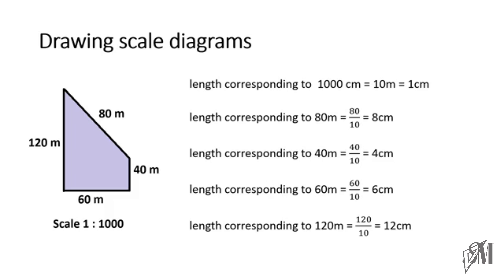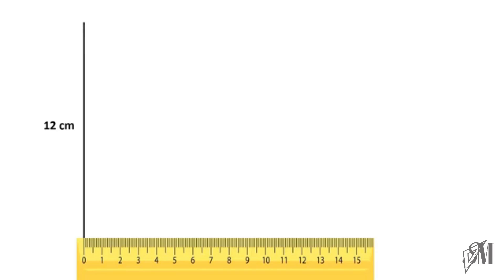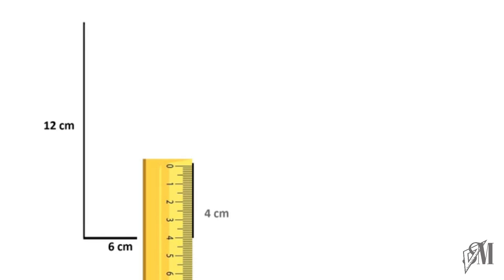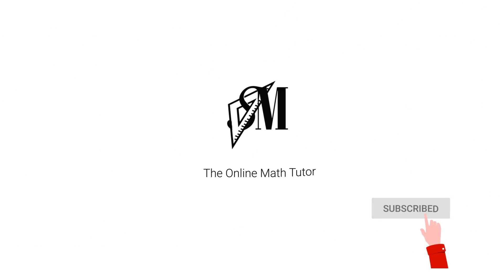Now let's draw this. Take a ruler — the first length is 12 centimeters for 120 meters, then 6 centimeters for 60 meters, then 4 centimeters, and joining these gives the final side of 8 centimeters. This is the scale diagram of the figure. Remember to mention the scale. I hope this has made clear how to draw scale diagrams, decide lengths, and determine actual lengths from a scale diagram.